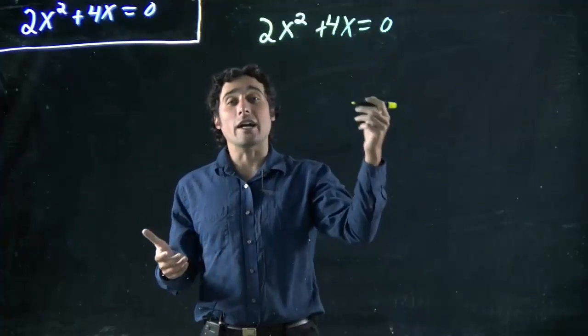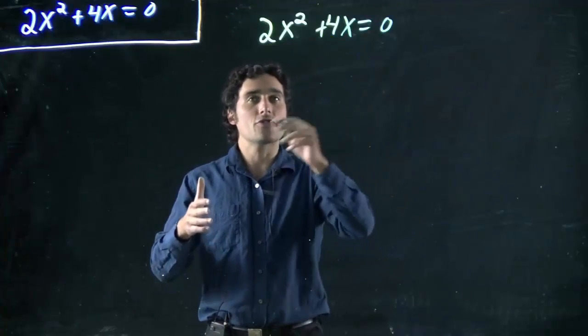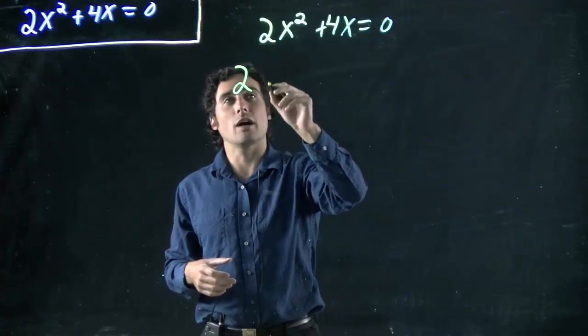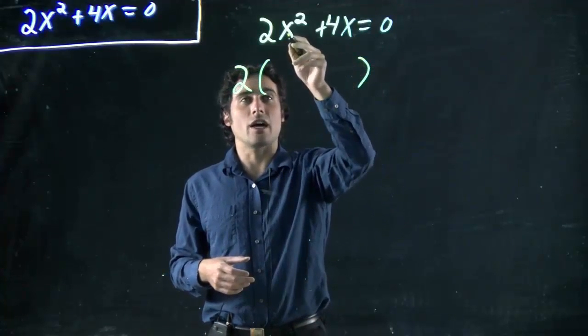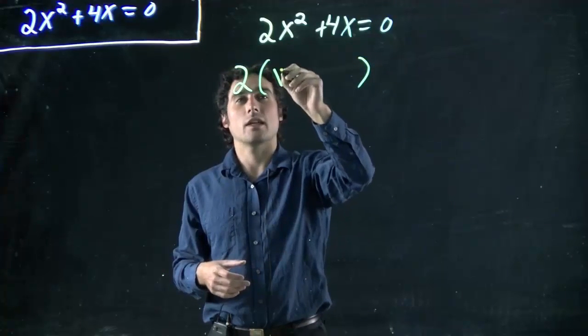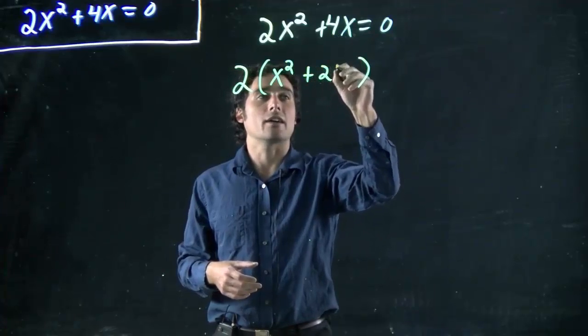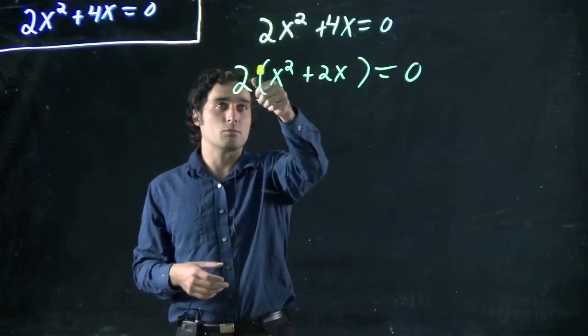Well this is a 2, this is a 4. So I could divide both of these by 2. I could bring the 2 out. So if you think of that, I bring 2 out from both. I'm going to put it outside of brackets. So if this was divided by 2, what is left over? x². If this was divided by 2, what's left over? 2x. And we still have 0 on this side because we just brought out the 2.